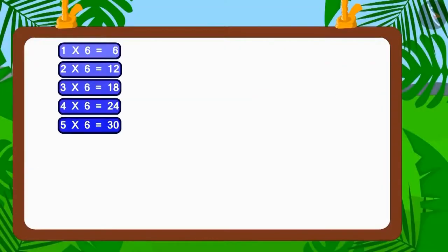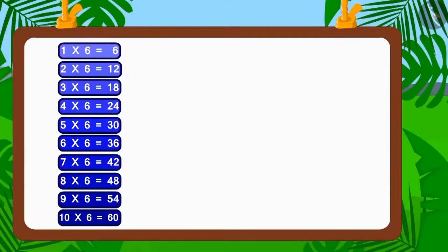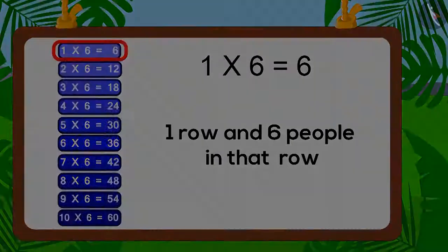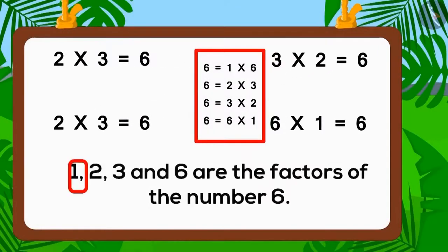Now, let's look at the table of six. Does the number six appear in the table of six? Yes. One multiplied with six is six. Therefore, six is also the factor of number six. So, one line and six people in each line is a good option. Today, we saw that one, two, three, and six are the factors of the number six.